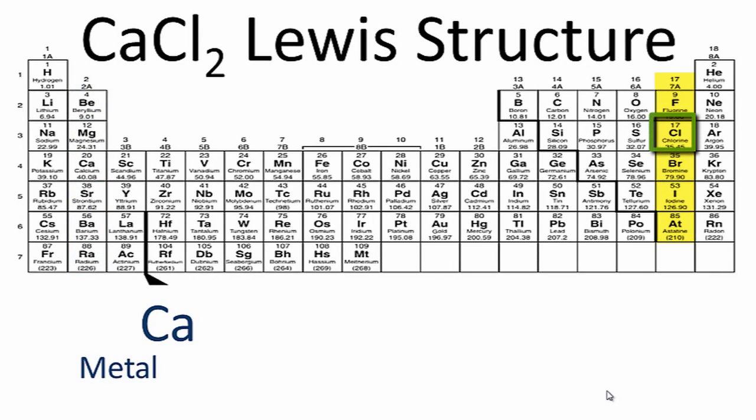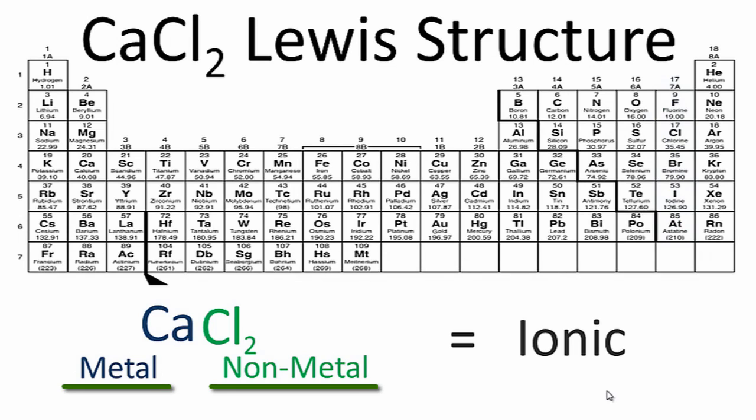For chlorine, that's over in 17 or 7A, it has 7 valence electrons and it's a nonmetal. When we have a nonmetal and a metal, we have an ionic compound.